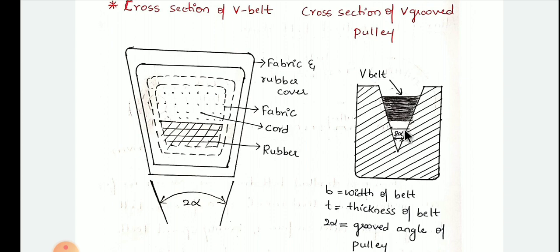The effect of the groove is to increase the grip of the V-belt on the pulley. The V-section groove in the belt drive gives proper gripping between the belt and the pulley. As a result, it reduces the chances of slipping. In open-belt drive and cross-belt drive, the slippage chances are more, whereas in V-belt drives, the chance of slipping is reduced.